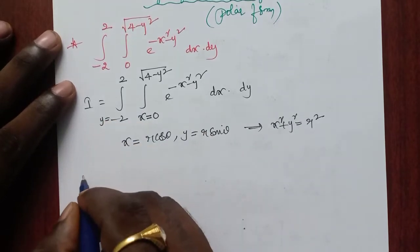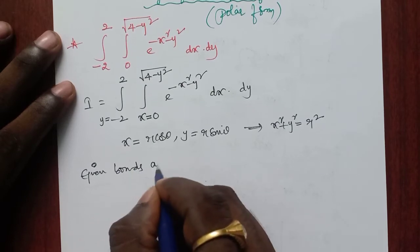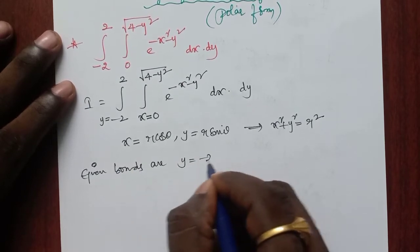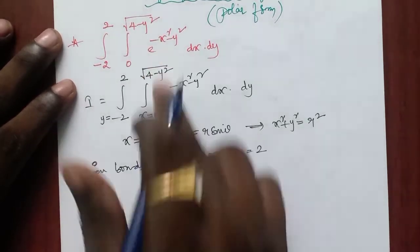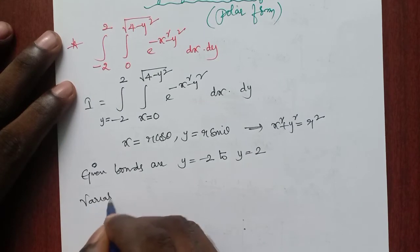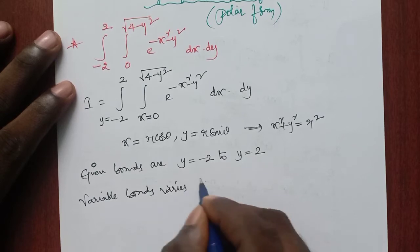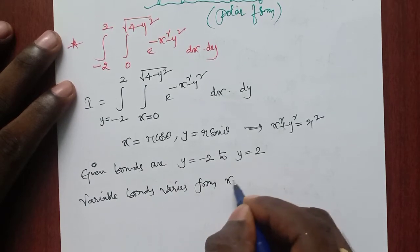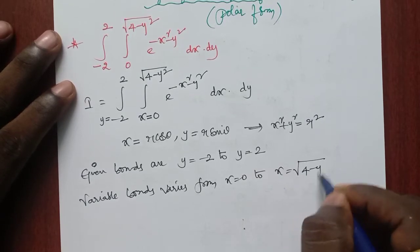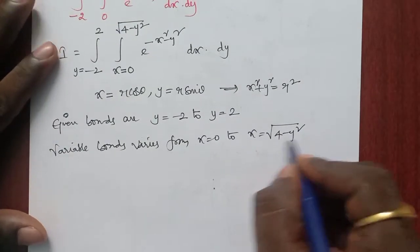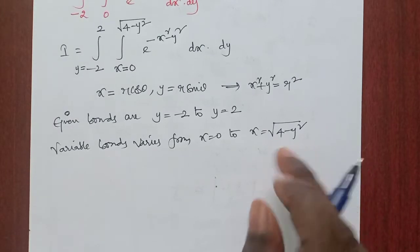Now, coming to the bounds. The given bounds are: y equal to minus 2 to y equal to 2. The variable limits vary from x equal to 0 to x equal to root over 4 minus y square. Clearly, since we take the positive root, x equal to root over 4 minus y square represents a semicircle.